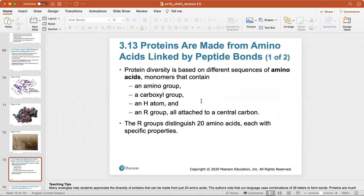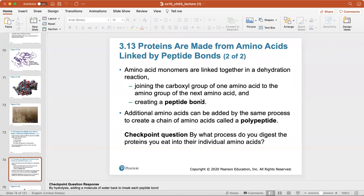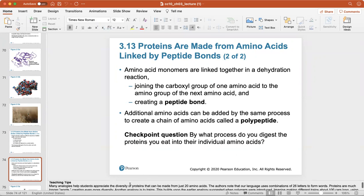Protein diversity is based on different sequences of amino acids, which contain an amino group, a carboxyl group, a hydrogen atom, and an R group, all attached to a central carbon. The R group is what distinguishes the 20 different amino acids from each other. Amino acid monomers are linked together in a dehydration reaction, creating a peptide bond. Additional amino acids can be added, forming a chain called a polypeptide. By what process do you digest the proteins you eat into their individual amino acids? This is by hydrolysis. When you add a molecule of water back in, you break each peptide bond.